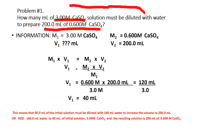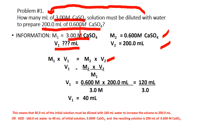The problem means that a certain amount of water will be added to a volume of 3 molar calcium sulfate, and after adding that water the resulting solution is 200 milliliters of 0.6 molar calcium sulfate. The initial molar concentration M1 is 3 molar, the initial volume V1 is the unknown, M2 after dilution is 0.6 molar, and the volume after dilution V2 is 200 milliliters.